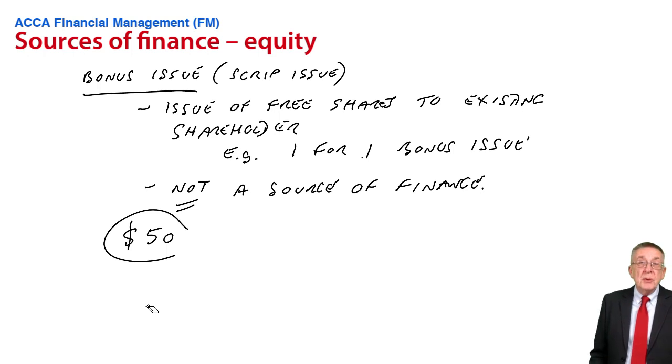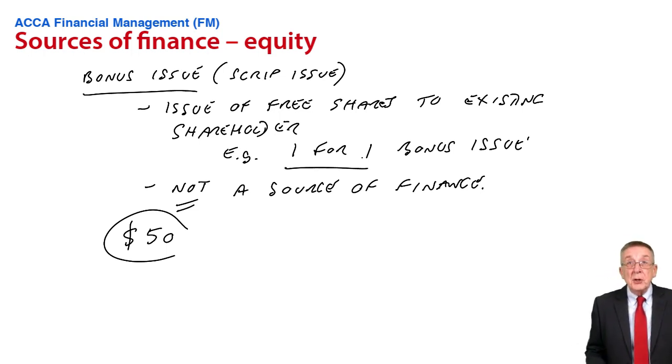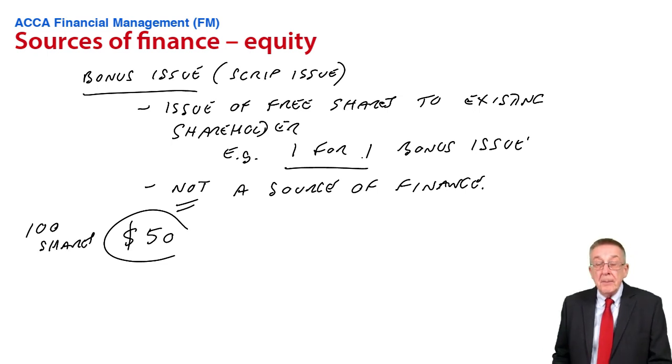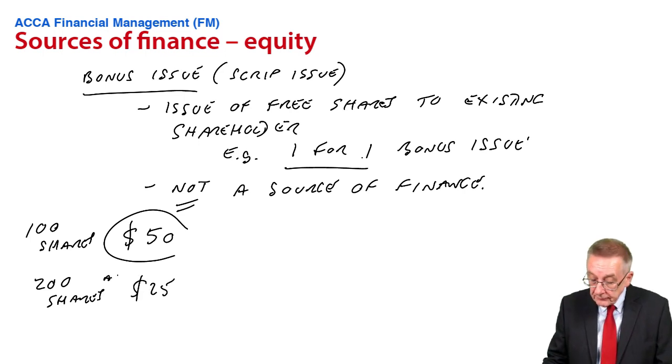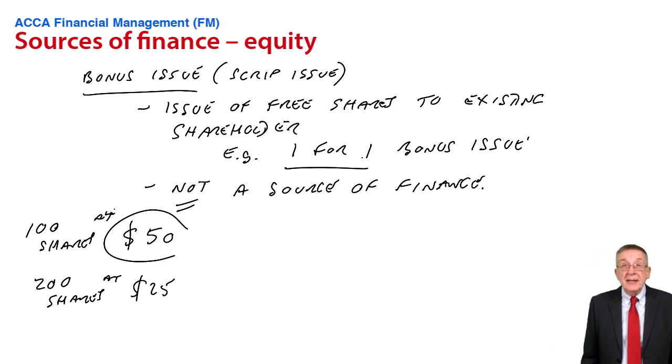Think about it. It's like a rights issue with no money. The share price is currently 50. And suddenly, they have a one-for-one bonus issue, and everybody has twice as many shares. They're not paid anything, they're not going to be worth any more. But what's going to happen - instead of perhaps having 100 shares that at the moment are worth $50 each, if they have a one-for-one issue, you suddenly have 200 shares, but they'll only be worth $25 each. So you're no better or worse off.